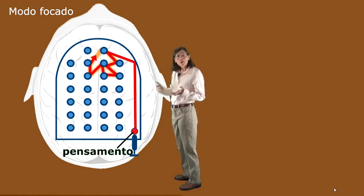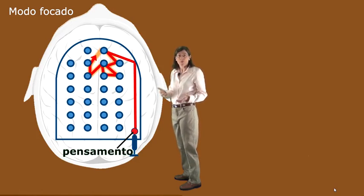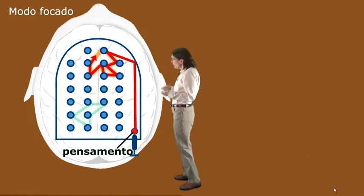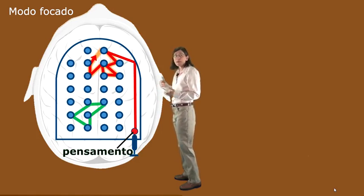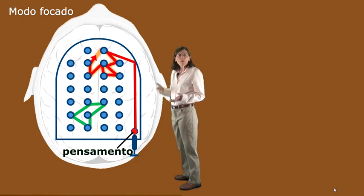But what if the problem you're working on needs new ideas or approaches, concepts you haven't thought of before? That's symbolized here by this neural pattern towards the bottom of the pinballed machine area. But if you haven't thought that thought before, you don't even know how that pattern feels or where it is.